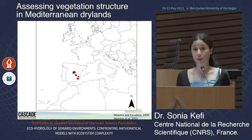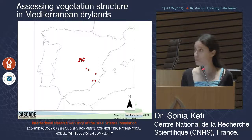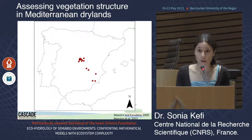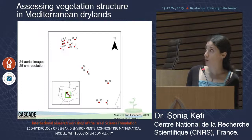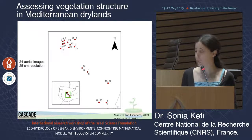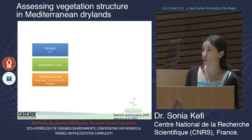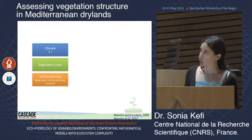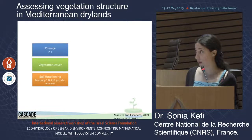We're working on a number of sites in Spain along a gradient from the center to the southeast of Spain — a similar dataset to that published by Fernando Maestre in 2009 and 2012. We're trying to address whether vegetation cover and spatial structure change in a predictable way along a degradation gradient. We have 24 aerial images along this environmental gradient where the resolution of a pixel is 25 centimeters. In addition, we have climate data including average annual precipitation and temperature, vegetation cover estimated from one-dimensional transects on the ground, and soil functioning variables measured using five samples per site.